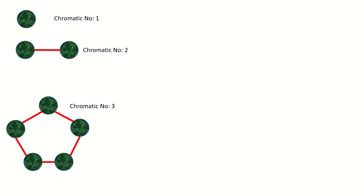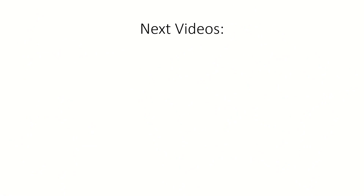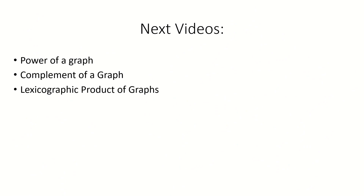The beauty of this is that we can start with a triangle-free graph, say the singleton graph, and then apply the Mycielskian construction over and over, giving us new triangle-free graphs with arbitrarily high chromatic number. In fact, the sequence of graphs you get by starting with the singleton graph and applying the Mycielskian repeatedly is called the Mycielski graphs. In my next video, we'll take a look at some other graph operations like the power of a graph, the complement of a graph, and the lexicographic product of two graphs. Thanks for watching.